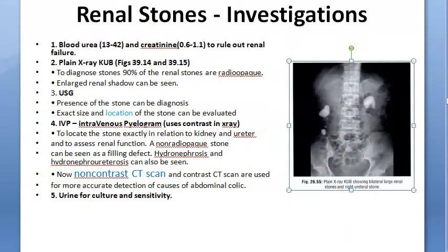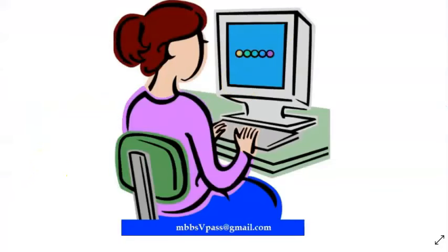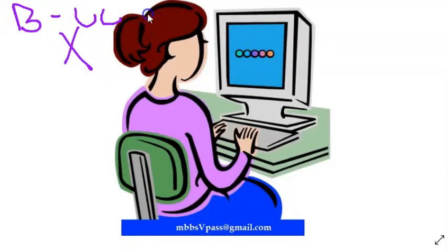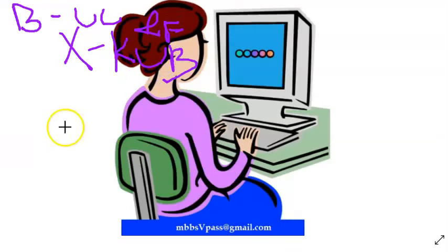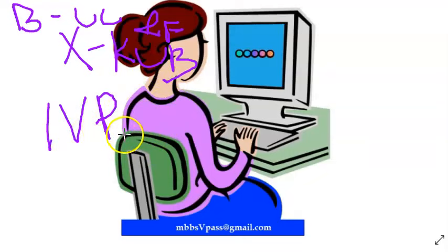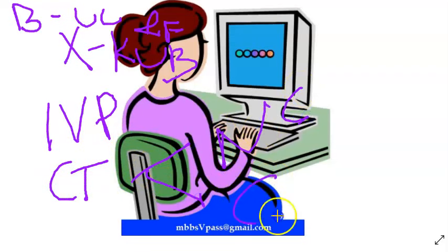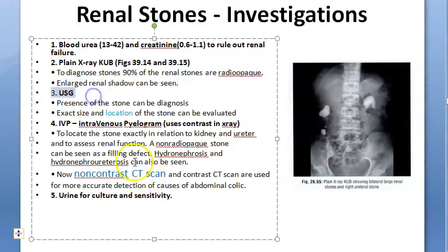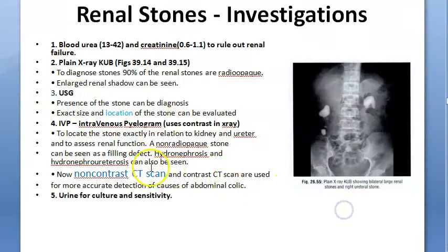To summarize investigations for renal stones: blood urea and creatinine to check renal function; X-ray KUB; intravenous pyelogram for radiolucent stones; CT scan — non-contrast and contrast; urine analysis and culture and sensitivity to check for UTI and identify susceptible antibiotics; and ultrasound.